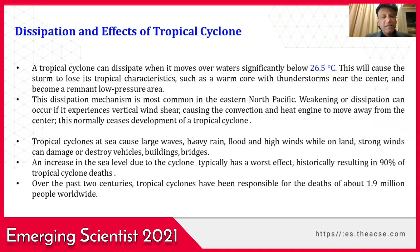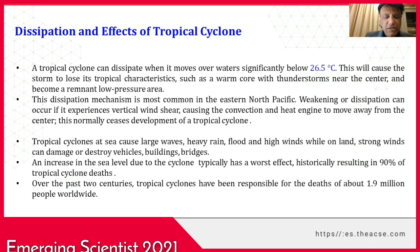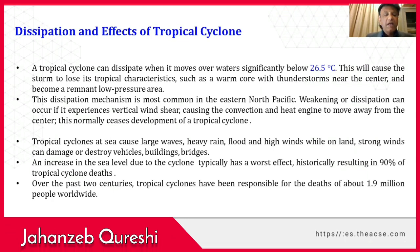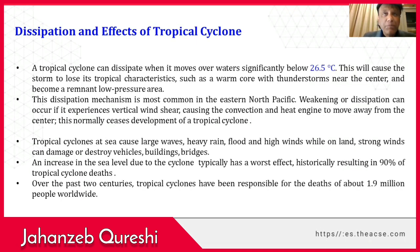Tropical cyclones at sea cause large water waves, heavy rain, flood, and high winds, while on land strong winds can damage or destroy vehicles, buildings, bridges, etc. An increase in sea level due to a tropical cyclone typically has the worst effect, historically resulting in 90 percent of tropical cyclone deaths. For the past two centuries, tropical cyclones have been responsible for the death of about 1.9 million people worldwide.